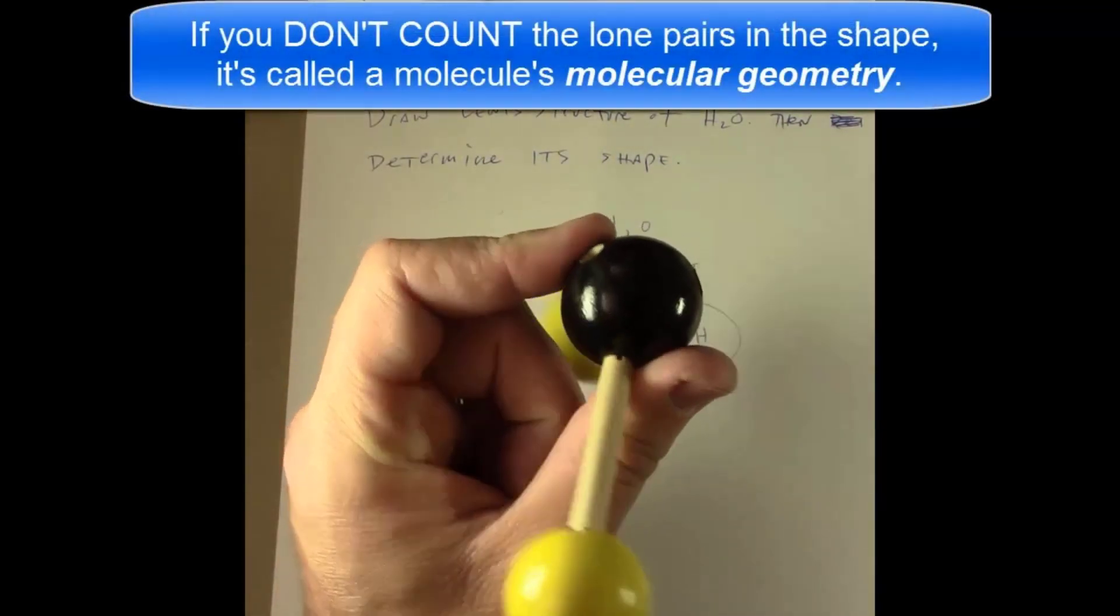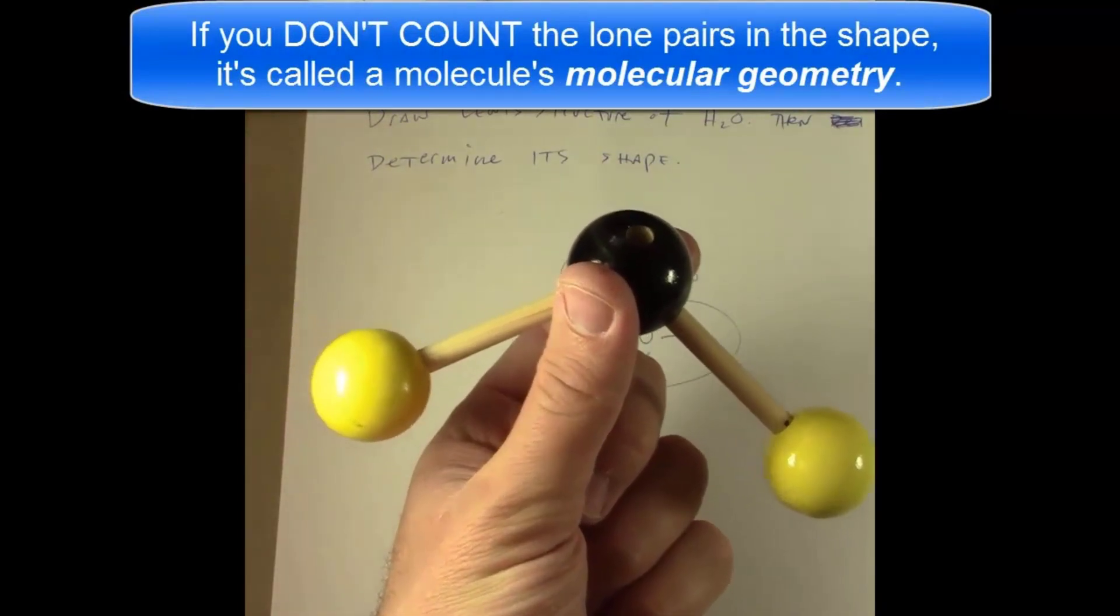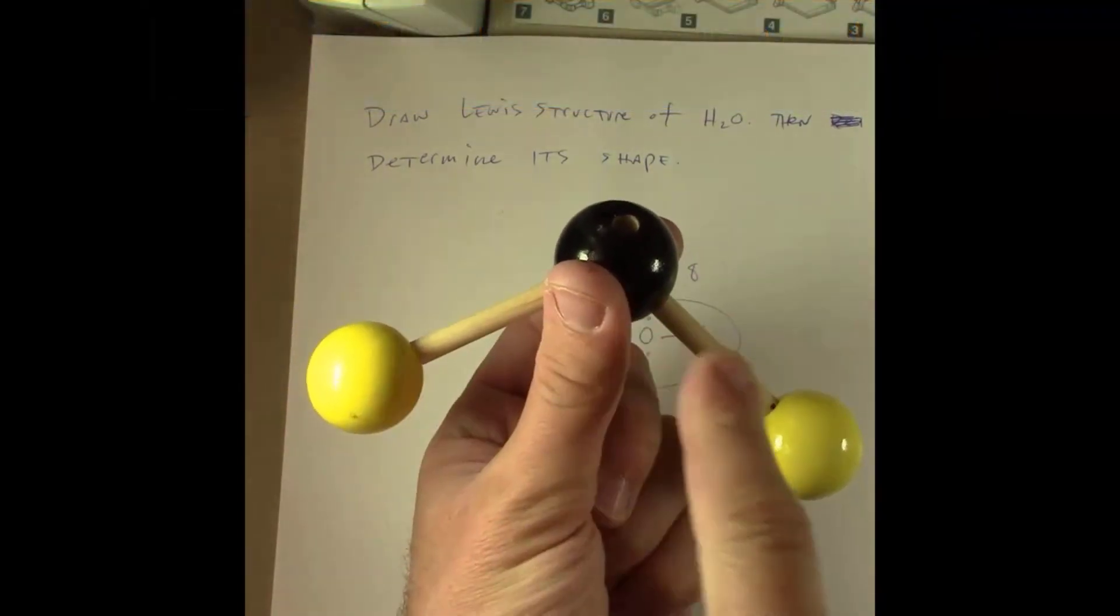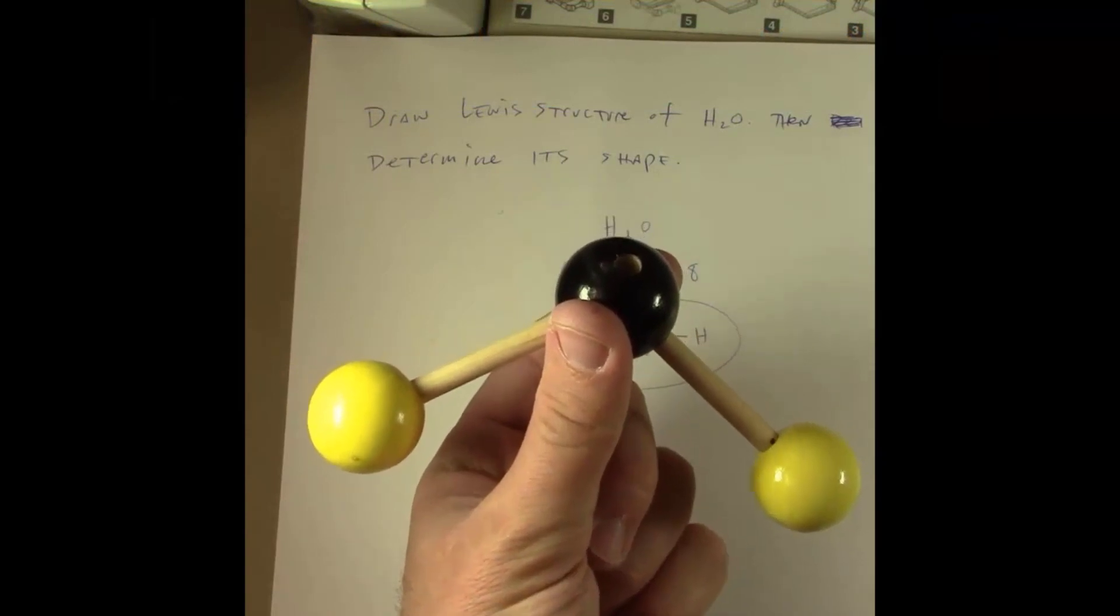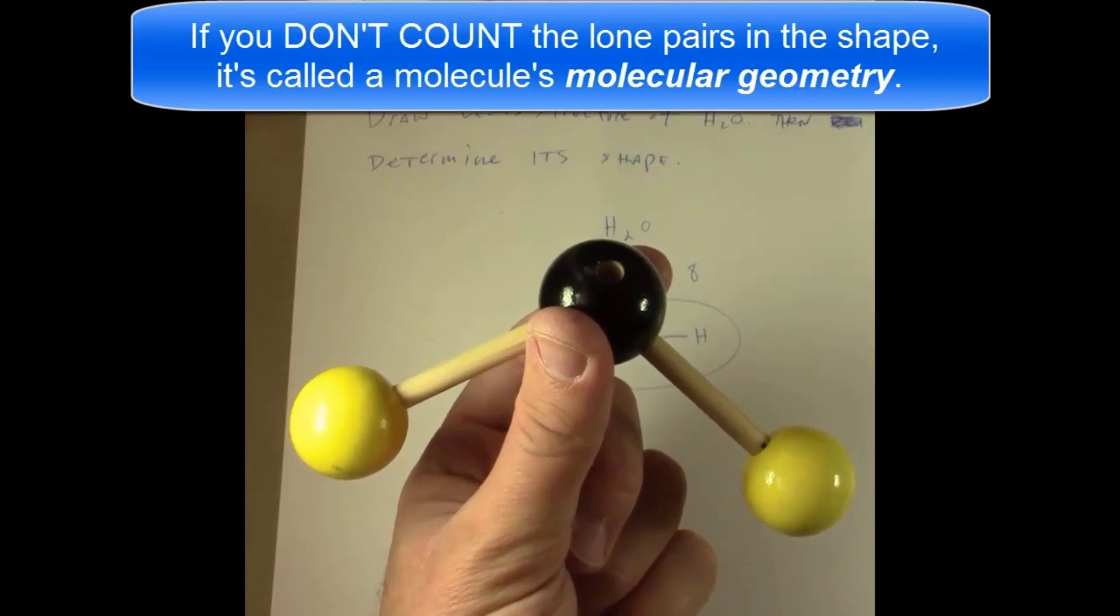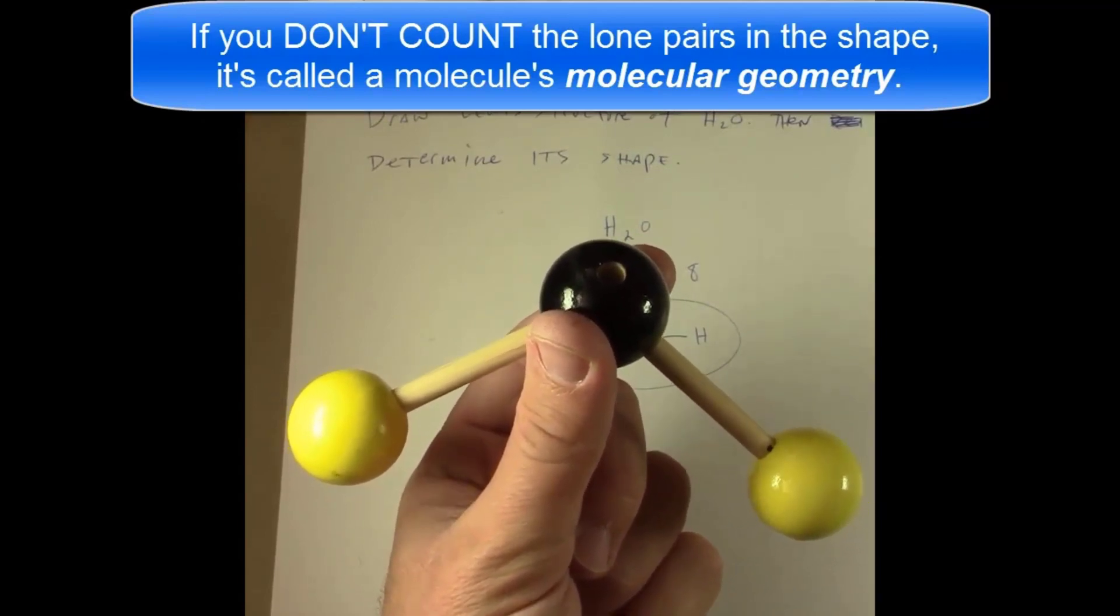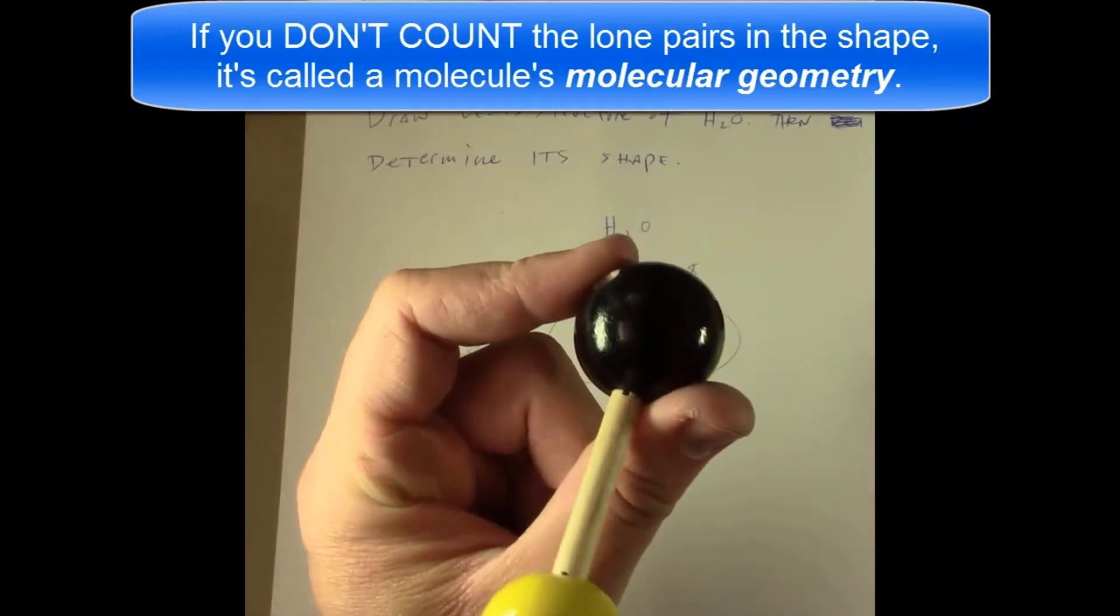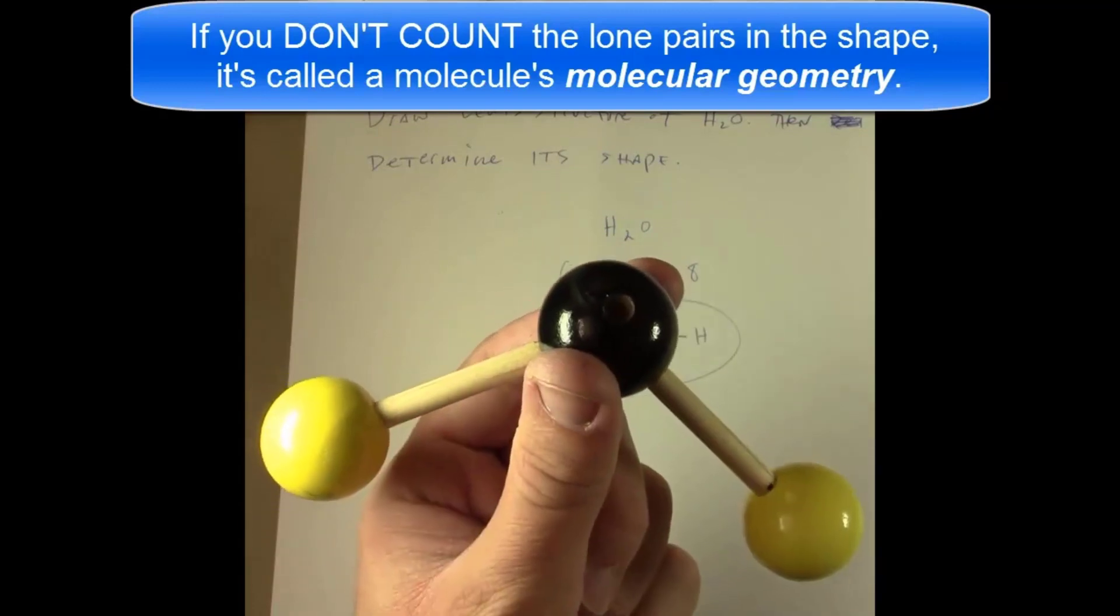If you're not counting those—in other words, if we could imagine us ignoring these lone pairs and just looking at what's left—then I would call this shape bent. Notice it looks like a bent shape. So this type of shape, the one which we count all of the atoms and ignore the lone pairs, is called the molecular geometry.